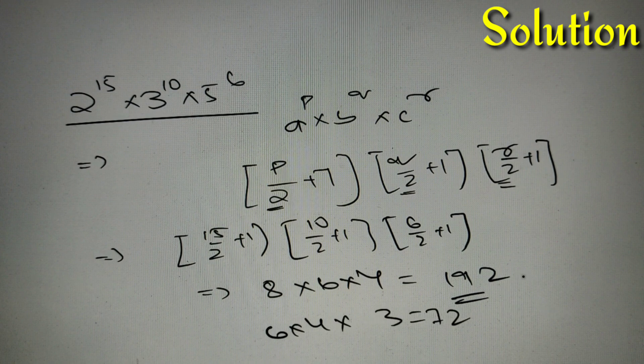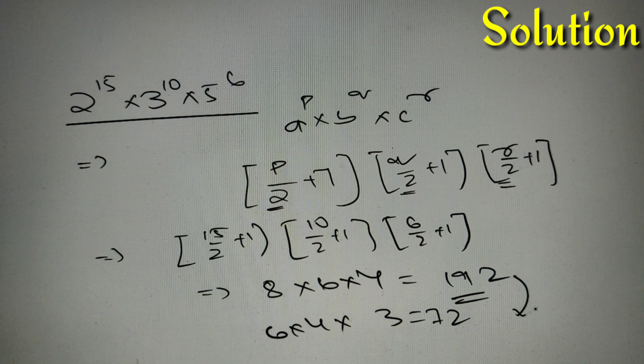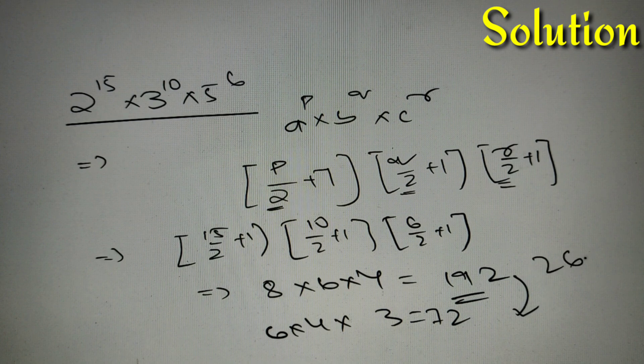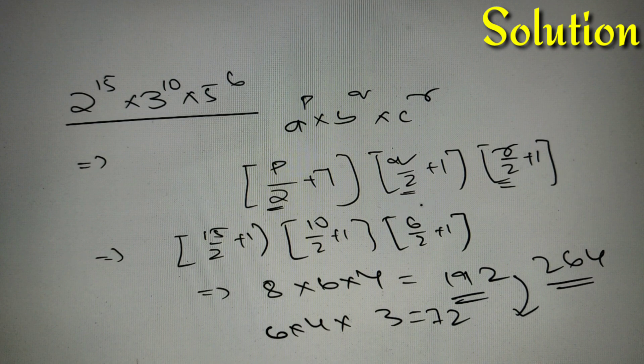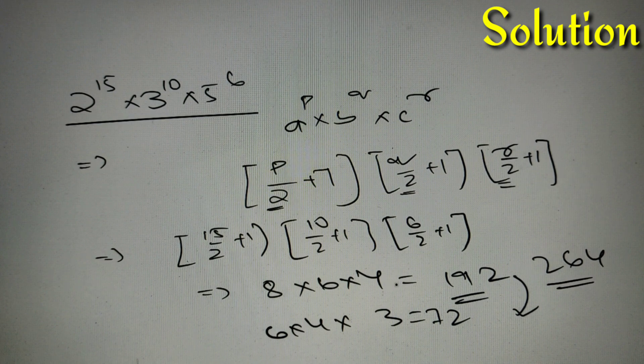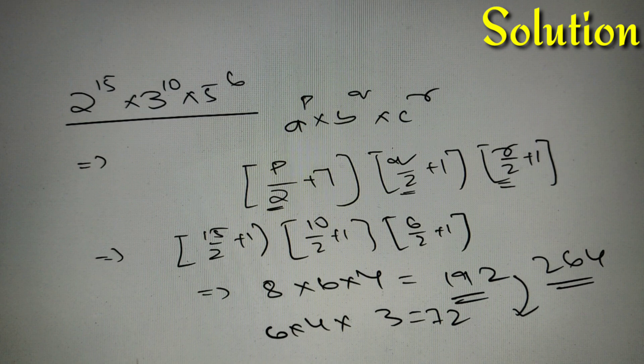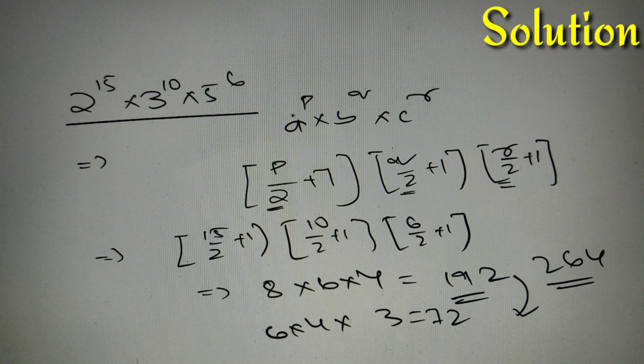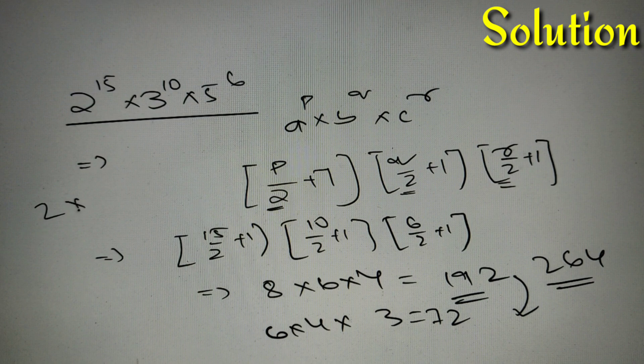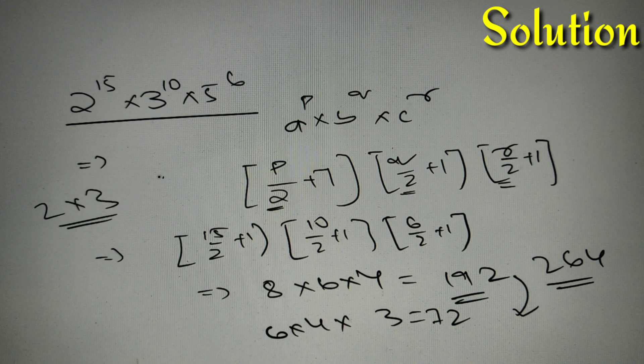So you might think that our final answer is 192 plus 72, that is 264, but you are slightly wrong because there will be some numbers that we have double counted. We have taken once 2 and then 3, and there may be multiples of both 2 and 3. So we have to subtract all the numbers which are multiples of both 2 and 3 in the powers. We have to subtract all the perfect 6th powers.